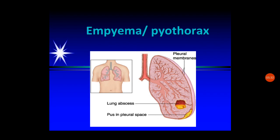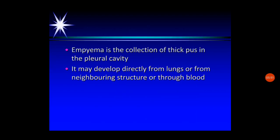The next topic is empyema, otherwise known as pyothorax. The term 'pyo' means pus, so pyothorax is pus in the pleural cavity. Empyema is the collection of thick pus in the pleural cavity. Pus may enter the pleural cavity directly from the lungs, from neighboring structures, or through the blood.